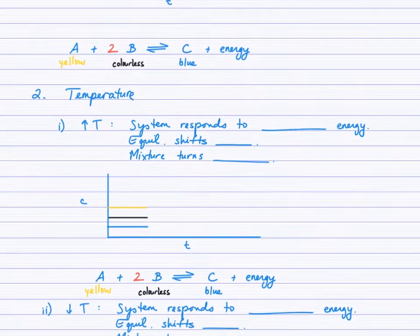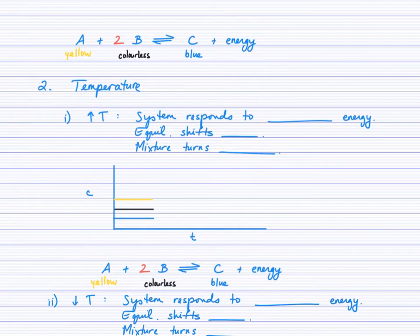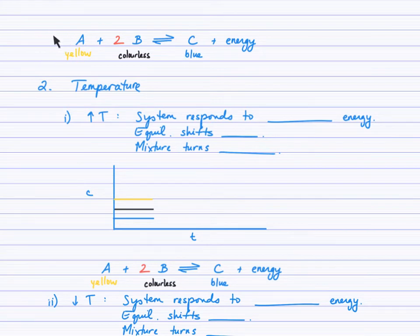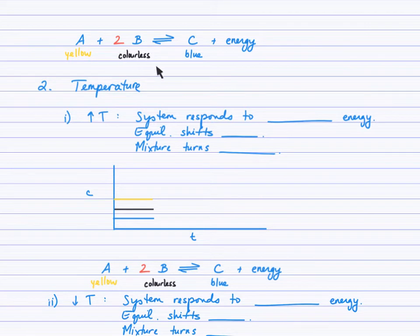Next, the stress is temperature. It's important to see the energy term. To answer a question about a temperature stress, you need to know where the energy term is. If it's on the right side of the arrow, the forward direction is exothermic and the reverse is endothermic. If the energy term were on the left, it would be the opposite. You'll need to note where the energy term is.